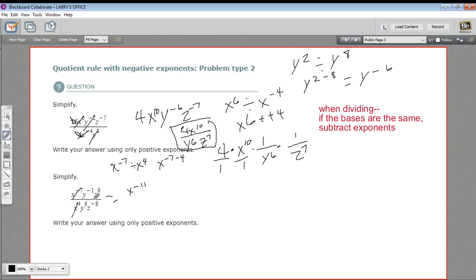Let's do the y's. y to the negative 1 divided by y to the 6th. That is y to the negative 1 minus 6. So that's y to the negative 7. And then I've got z to the 9th and z to the negative 8th. So that's z to the 9 minus a negative 8 power. 9 minus a negative 8 is like 9 plus 8. So that's z to the 17th.